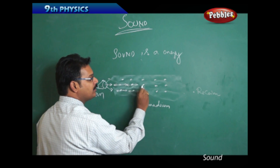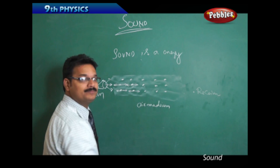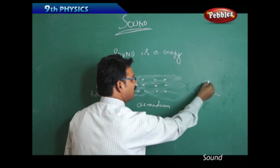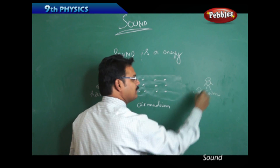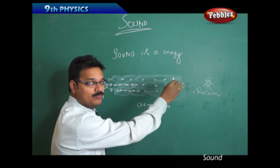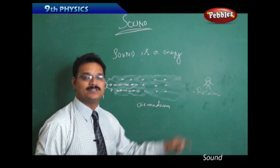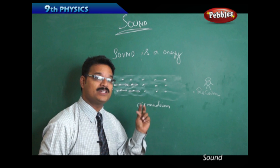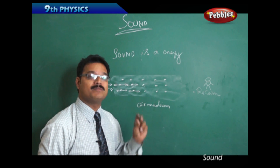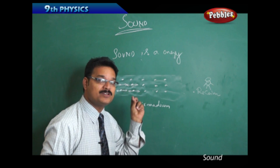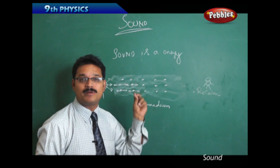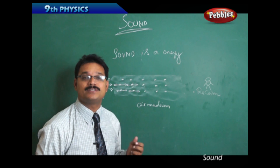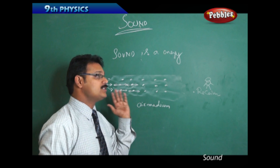Then the receiver — say the receiver is a person — the sound goes to the ears of the person. In the ear, you have a drum; the ear drum starts vibrating. Because of the vibration of the ear drum, the message goes to your brain, and then you understand that some sound is coming to your ears. This is how sound is produced and received.